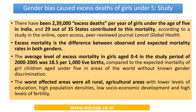A study published in The Lancet Global Health found 239,000 excess deaths per year of girls under the age of five in India. The average excess mortality for girls aged 0–4 during the study period 2000–2005 was 18.5 per 1,000 live births. The worst affected areas were rural, agricultural regions with lower education levels, high population density, and low socio-economic development.